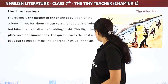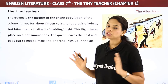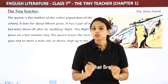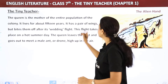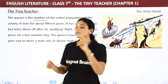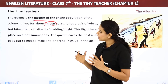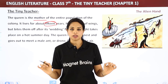Now let's talk about the queen ant. The queen is the mother of the entire population of the colony. She lives for about 15 years. She has a pair of wings — you may have seen some ants with wings. But she bites them off after her wedding flight.